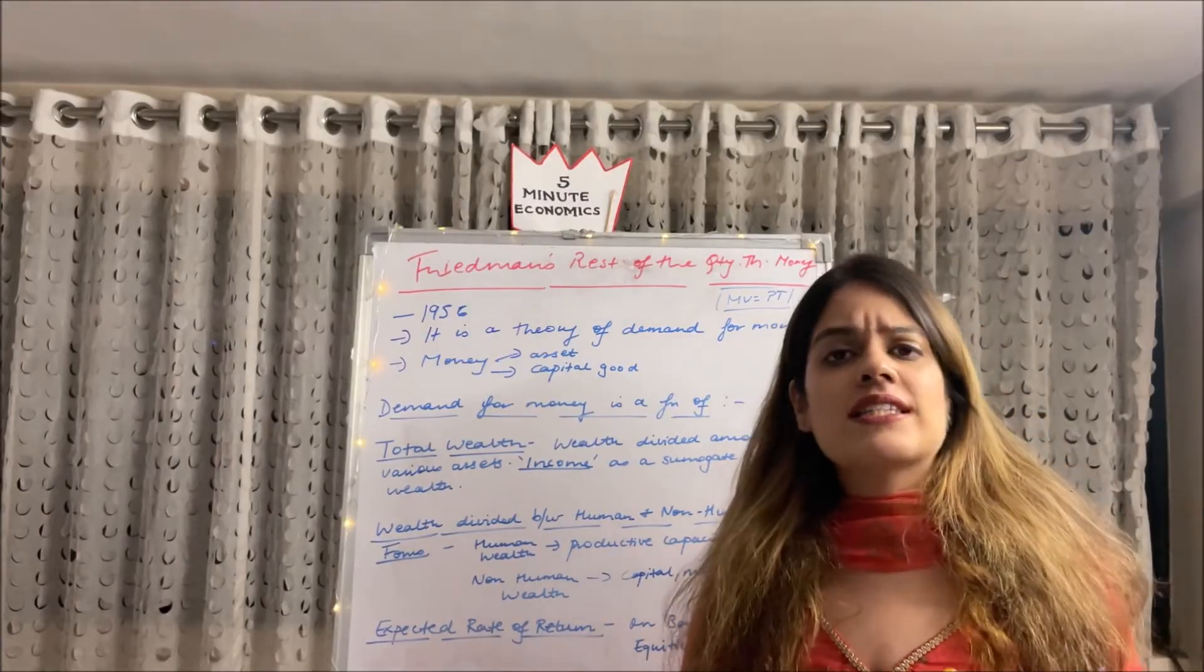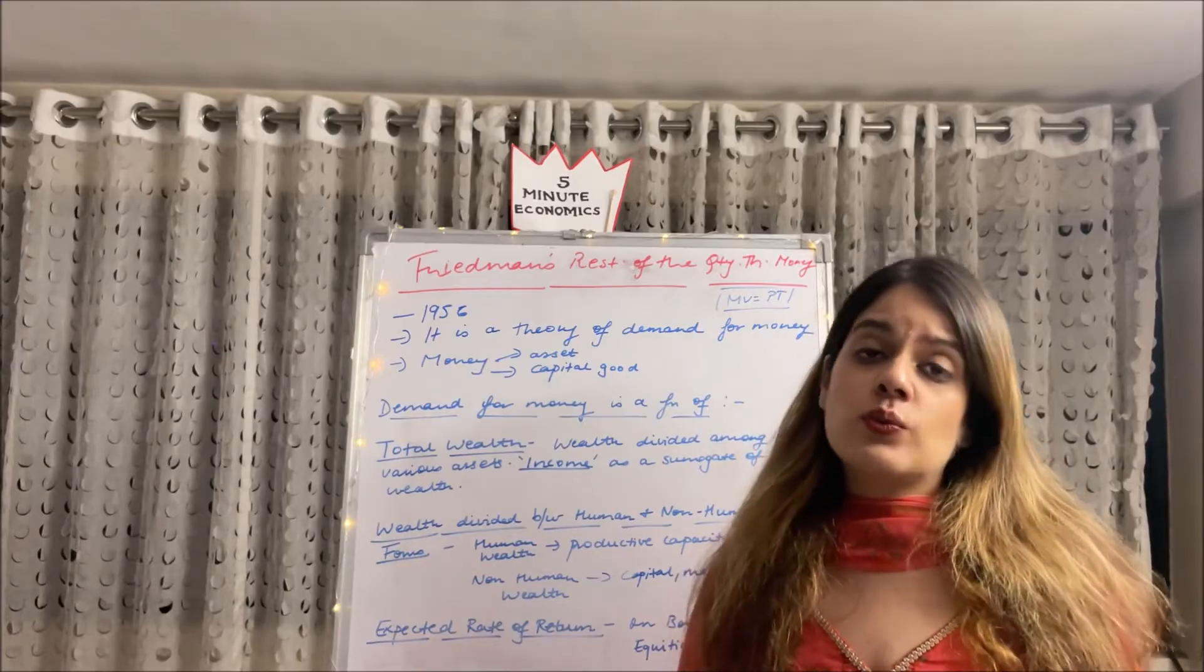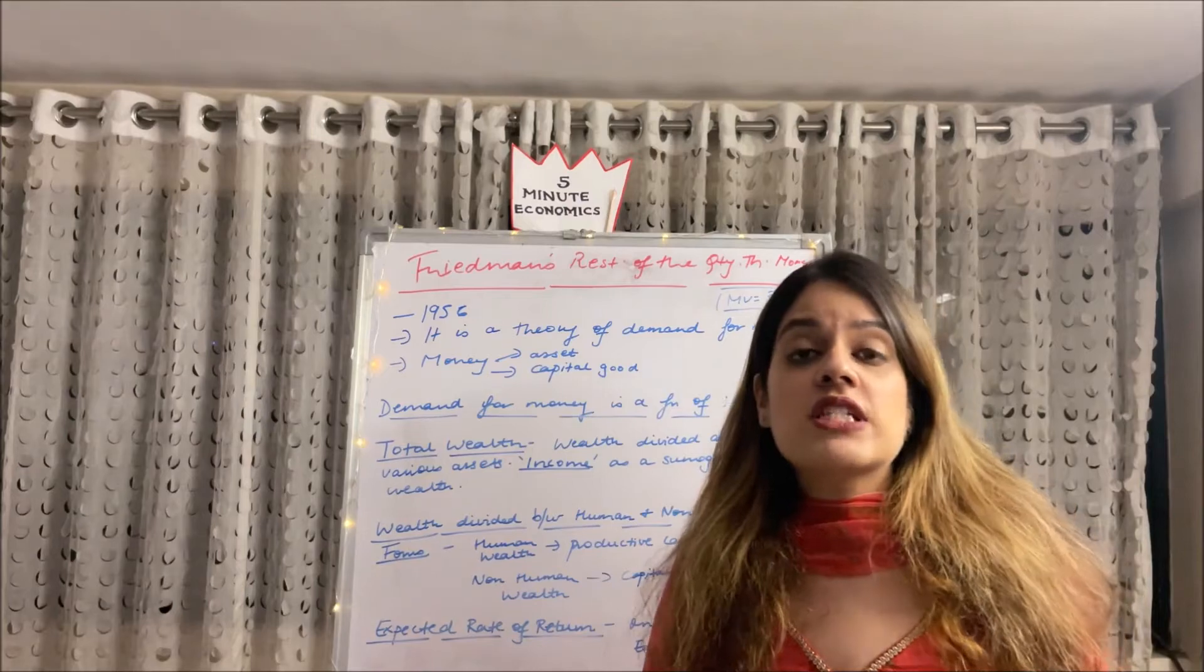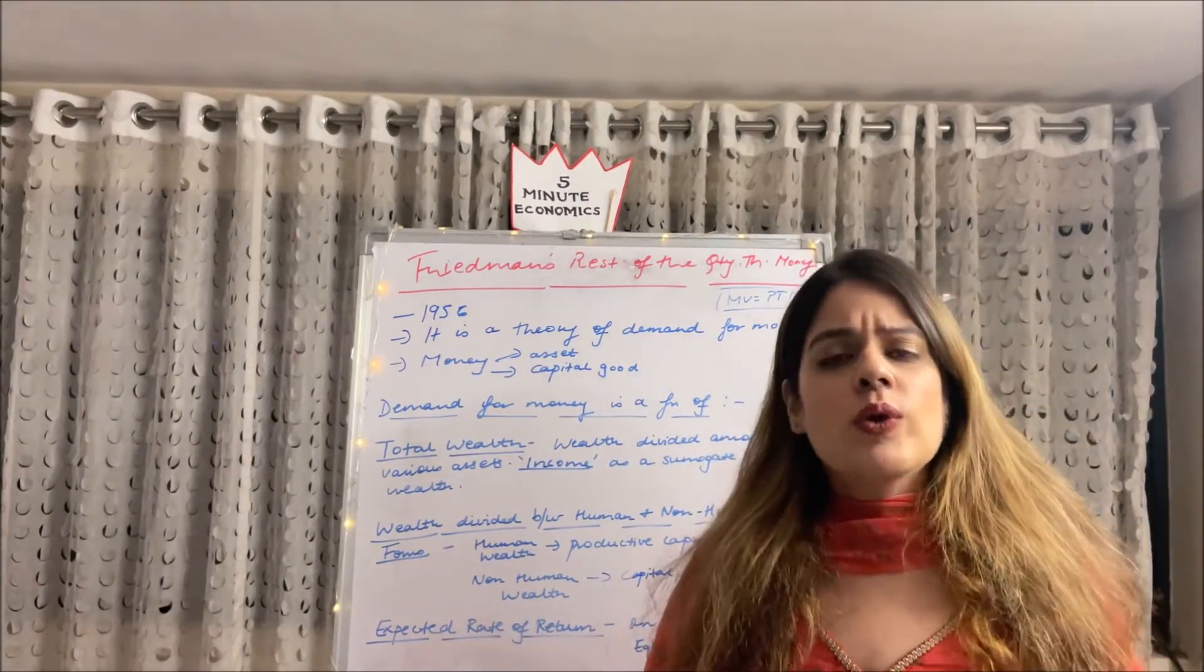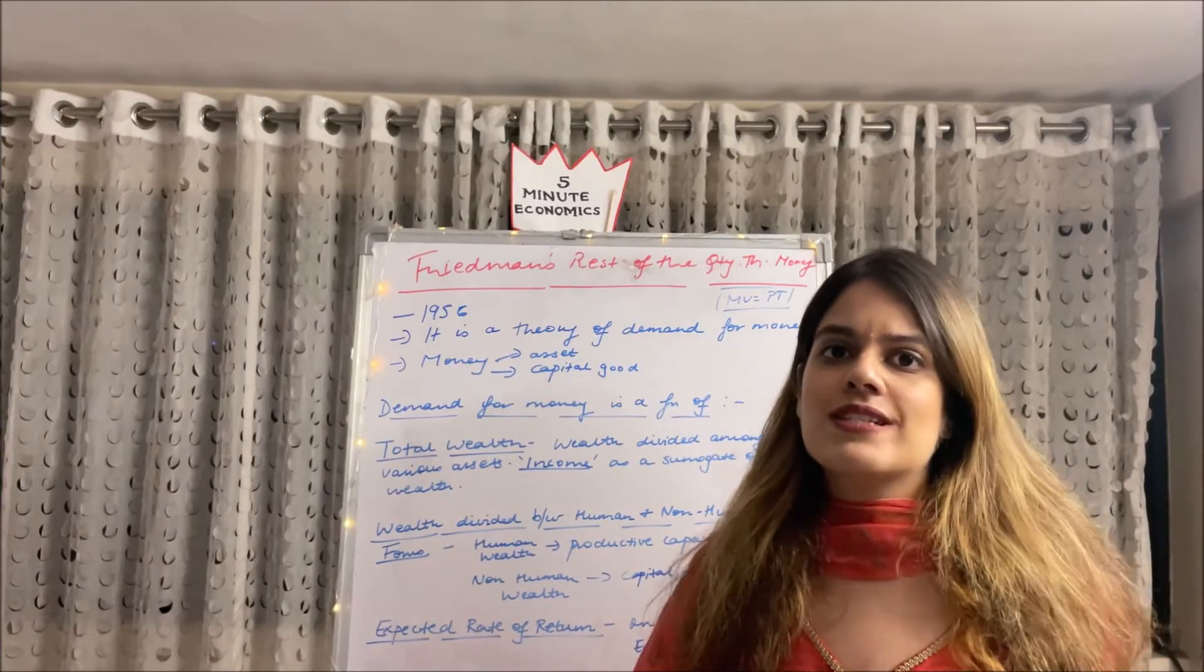Before this we had several theories of quantity theory which dealt with the fact that MV is equal to PT. This equation was told by the previous economists who said that if V and T being constant, we will say with the increase in the money supply in an economy the prices tend to rise.